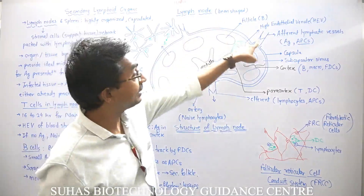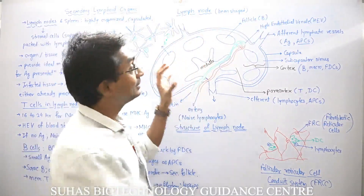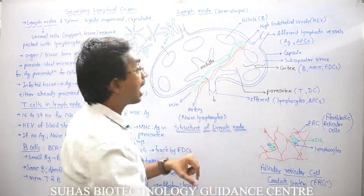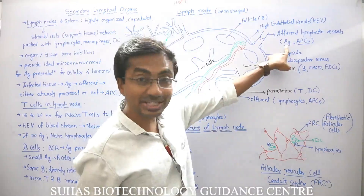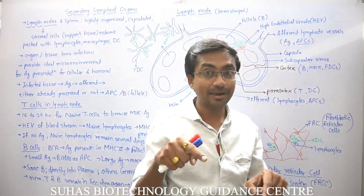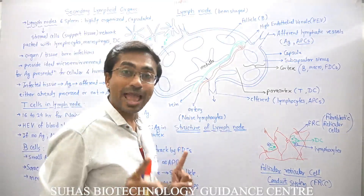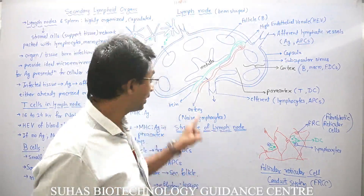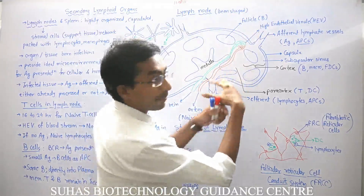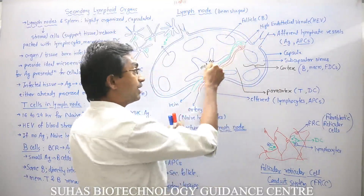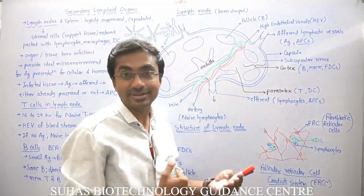The afferent lymphatic vessels bring lymph from the surrounding tissues or organs — there may be many — and they pierce into the lymph node, bringing antigens as well as antigen-presenting cells. The lymph then pours into the lymph node. Like any organ, the lymph node also has blood supply: a lymphatic artery branches into capillaries, which reunite to form venules, and exchange of oxygen, carbon dioxide, and nutrients takes place.